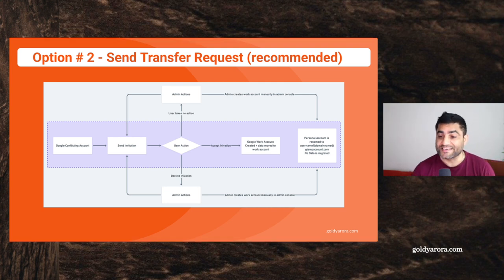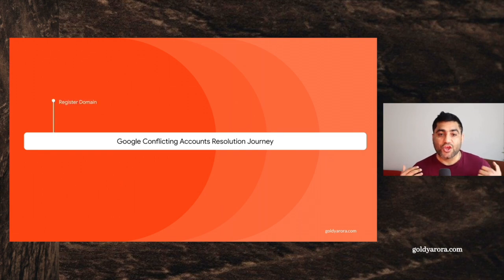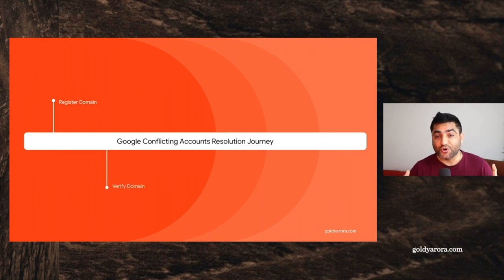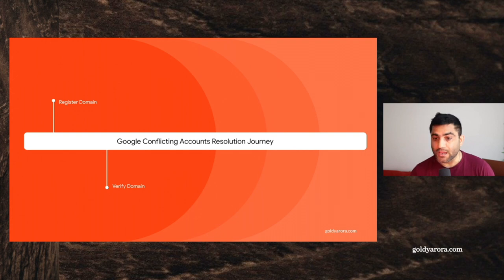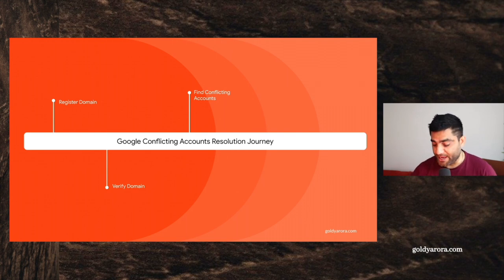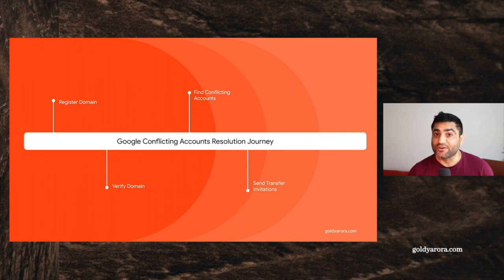Now we understand both options — let's see how the journey looks to resolve these conflicting accounts. Step one: you will need to register your domain with Google to use Google Workspace or enterprise services. Once you register your domain, Google will ask you to verify that you own it — I'll put the link in the description on how to verify domain ownership. After verification, you will be able to find conflicting accounts — accounts created with corporate email addresses as Google consumer or personal accounts — and once you see that list, you can take action: either create their work accounts directly, or better yet, send them a transfer request.